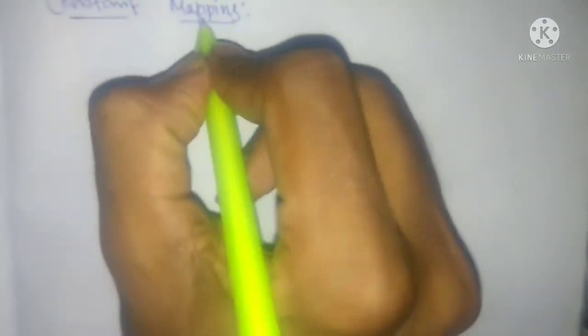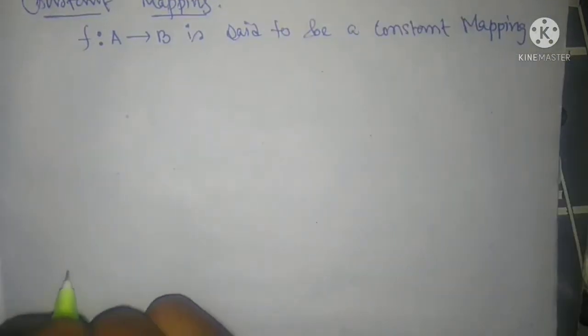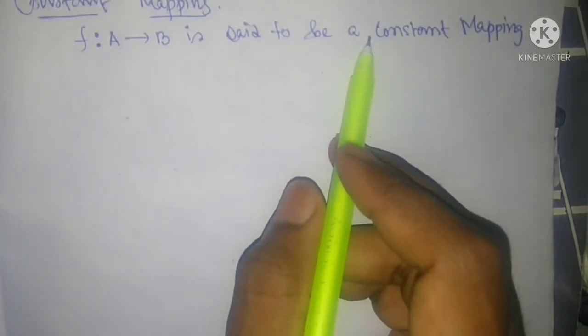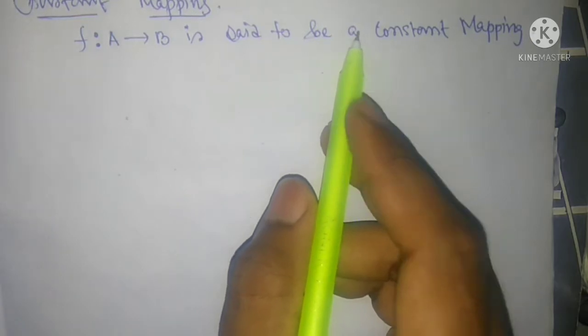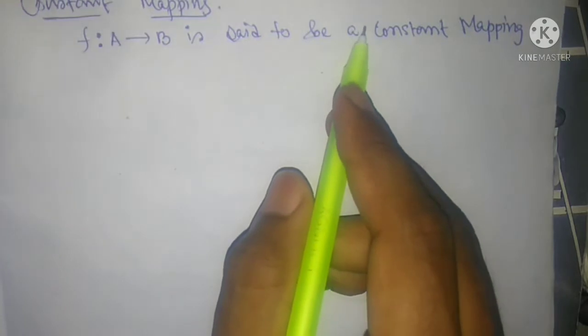Today our topic of discussion is constant mapping. A mapping f from A to B is said to be a constant mapping if every element of A maps to a constant — that is, a single fixed value. This means the image of f is exactly a singleton, that is, a single element.